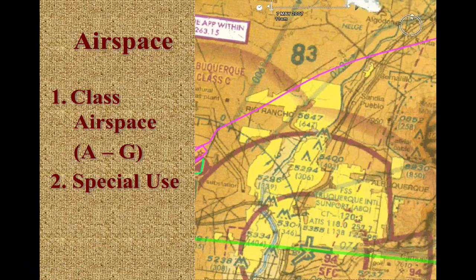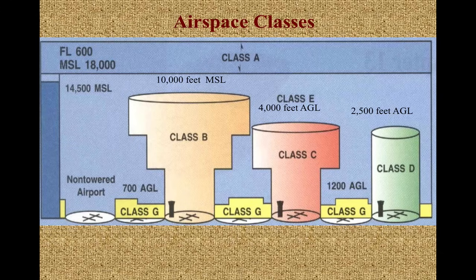Now we're going to take a look at airspace. The FAA breaks up airspace into two major categories. The first is class airspace, which gets an alphabetic designation like A, B, C, and so on. Then there's special use airspace — things like military practice areas or areas that are restricted. We're going to look at both today, but first we'll start with the class airspace system, A through G. One thing worth noting: there is no Class F in the United States.